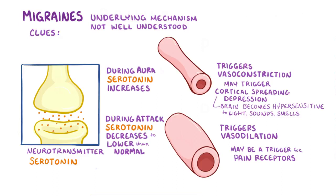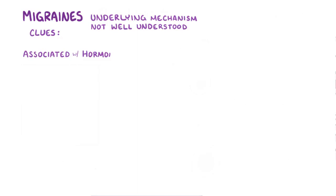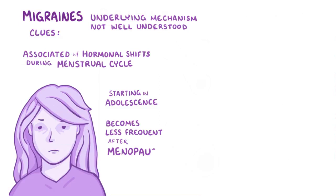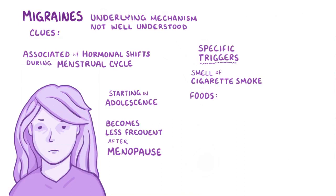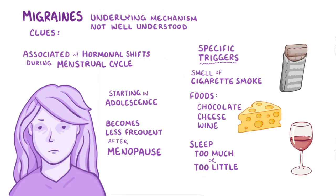In young women, migraines are often associated with hormonal shifts that occur during the menstrual cycle, starting up in adolescence and becoming less frequent after menopause. Migraines are also often associated with specific triggers like the smell of cigarette smoke, foods like chocolate or cheese, and drinking wine. Even sleeping too much or too little can sometimes be a trigger.